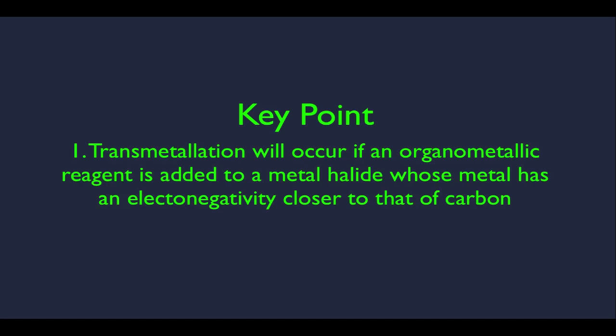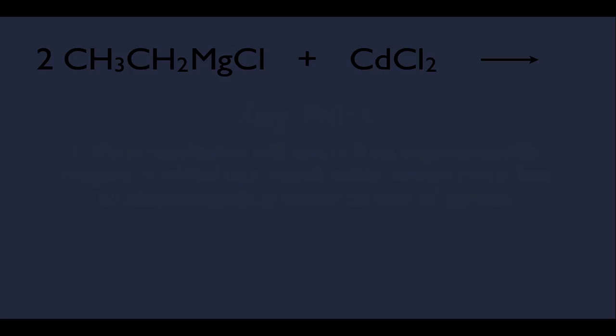Transmetallation will occur if an organometallic reagent is added to a metal halide whose metal has an electronegativity closer to that of carbon. That sounds like a mouthful, so we definitely want to make sure we understand this. I'm going to show you via example. It's the best way to understand it.